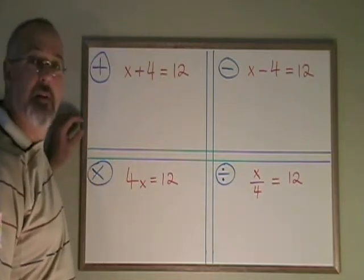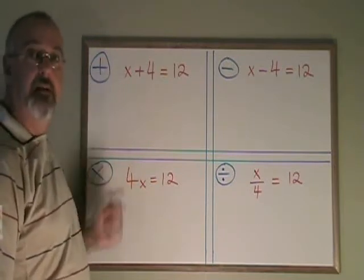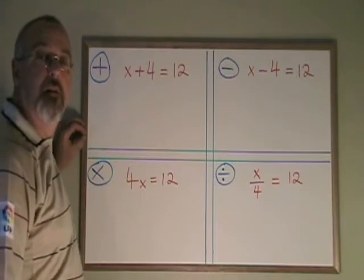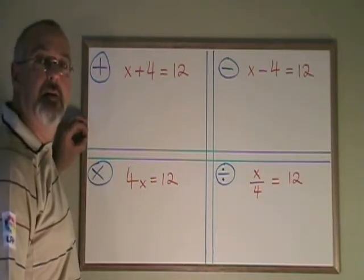The goal of algebra is to get the variable, in this case the x, isolated. I want my x alone on one side of the equals. I need to move any numbers that are with the x to the other side.